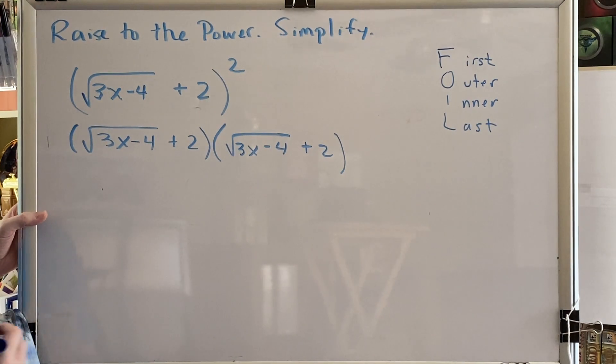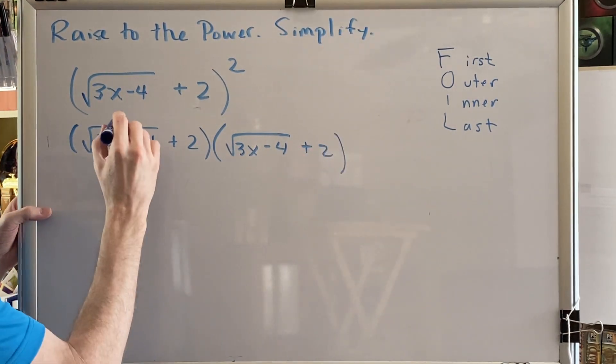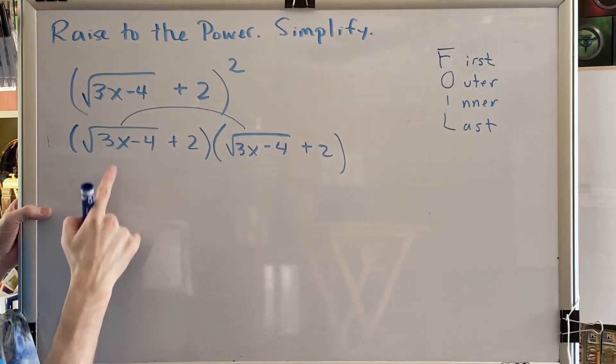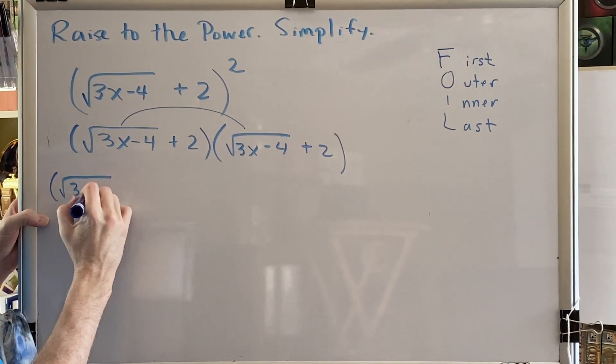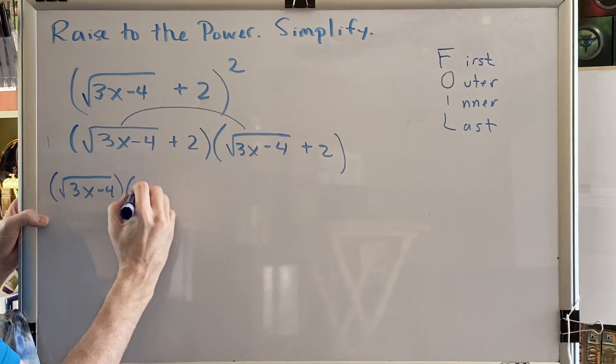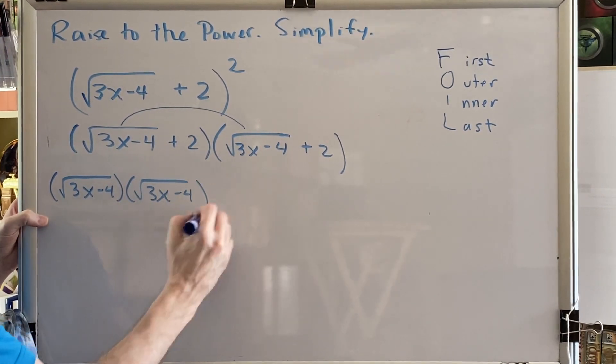Now perform the FOIL. F for first, so that would be the first times the first, which is the radical times the radical. So we write, square root of the difference 3x minus 4, times the square root of the difference 3x minus 4.